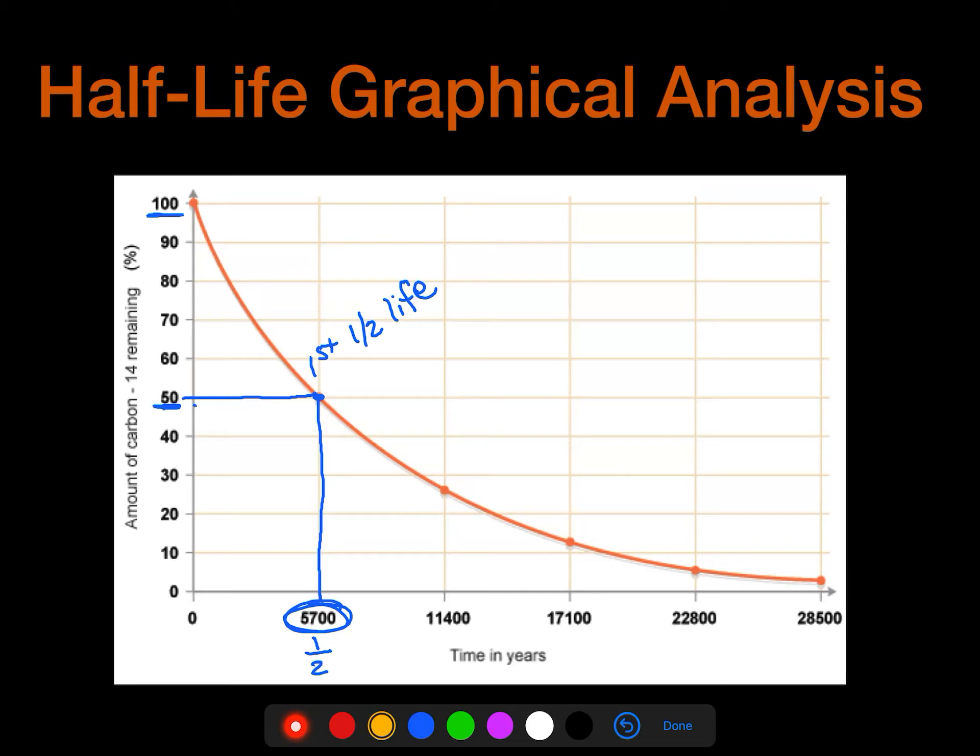And so the next half-life would occur then when we cut this 50 in half, and so that would be at 25, so here's our 25, and so we go across, and we're going to run into this data point here, and then down, and that's how much time it would take total time. Again, it's another 5,700 years.